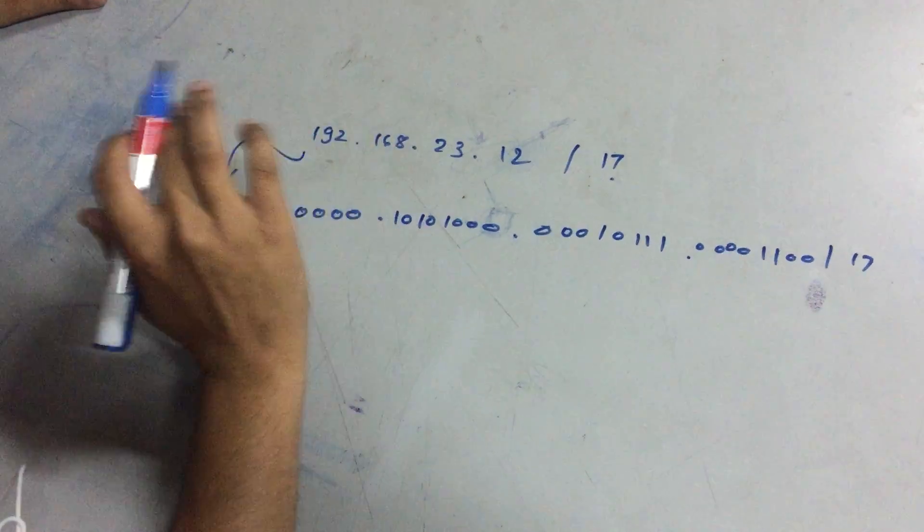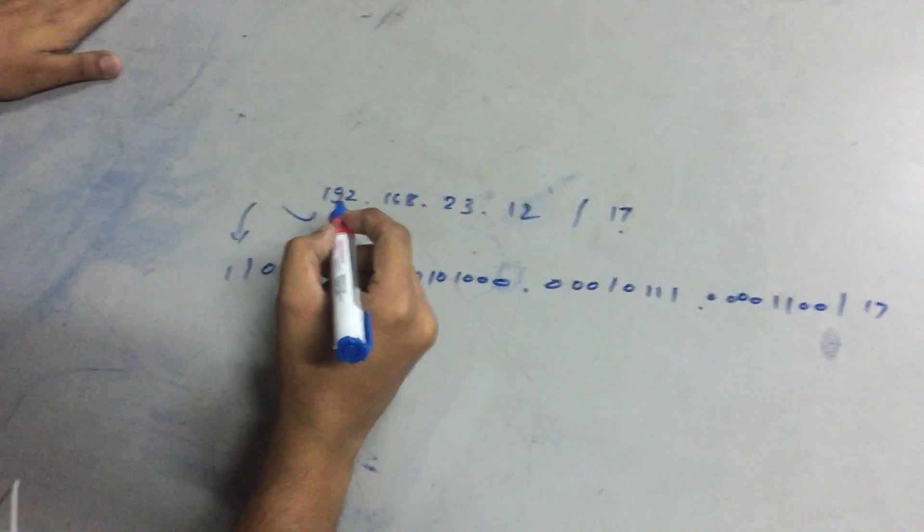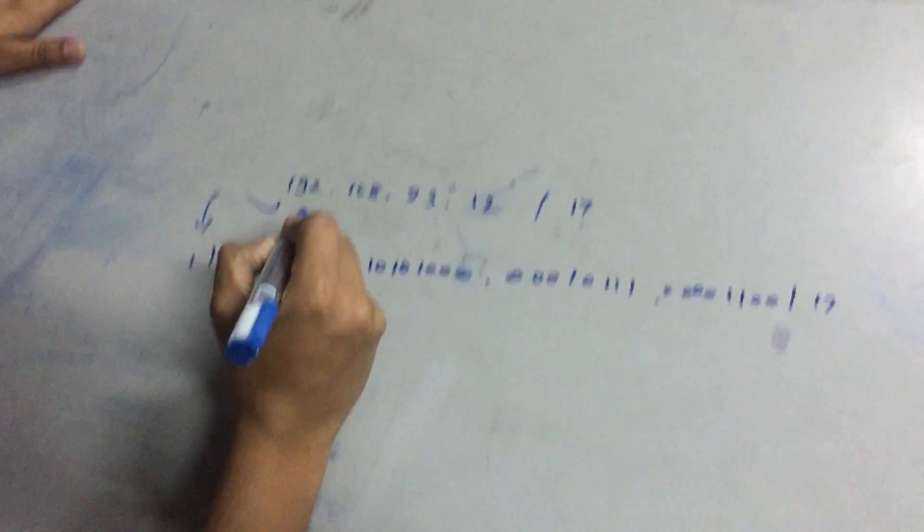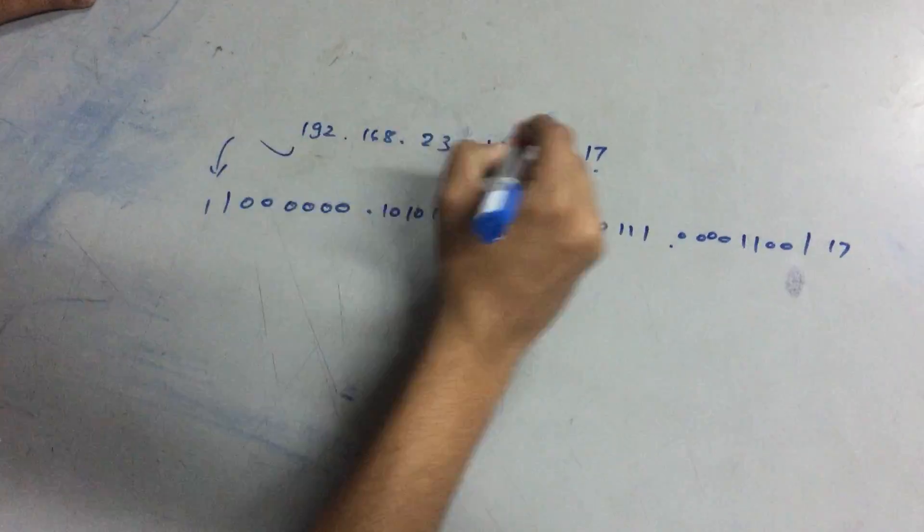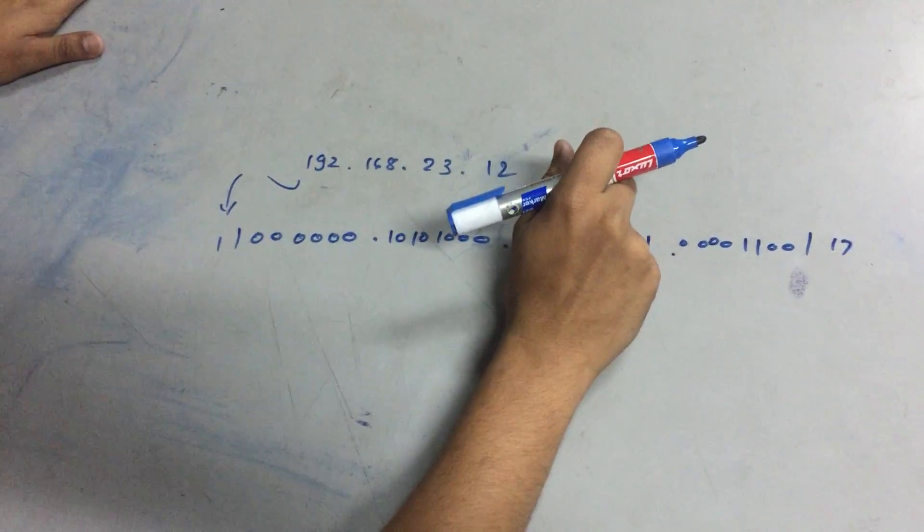This example will clear everything about classless IP address. We are going to find the first host address of this network having 17 as the network bit.